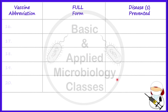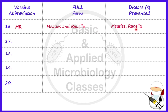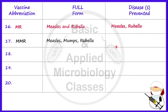Now let's talk about the next vaccine, that is MR. The full form of MR is Measles and Rubella. Measles and rubella viruses cause measles and rubella disease respectively, and these are prevented by the MR vaccine. The next vaccine is MMR — Measles, Mumps and Rubella — which provides protection against measles, mumps, and rubella, caused by the same kinds of viruses.